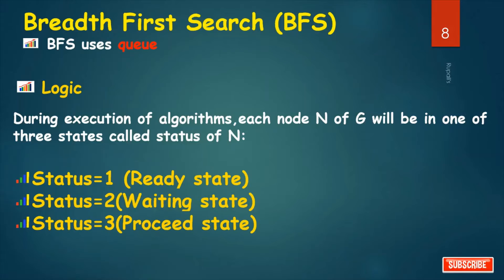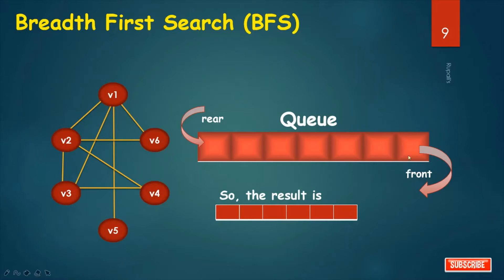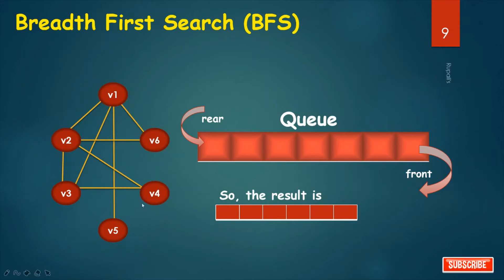Next is breadth first search, that is BFS. BFS uses a queue. During execution of the algorithm, each node in the graph will be in one of three states: status 1, that is steady state; status 2, that is waiting state; and status 3, that is proceed state. The rear end of the queue is the inserting end, and the front end is the deleting end.